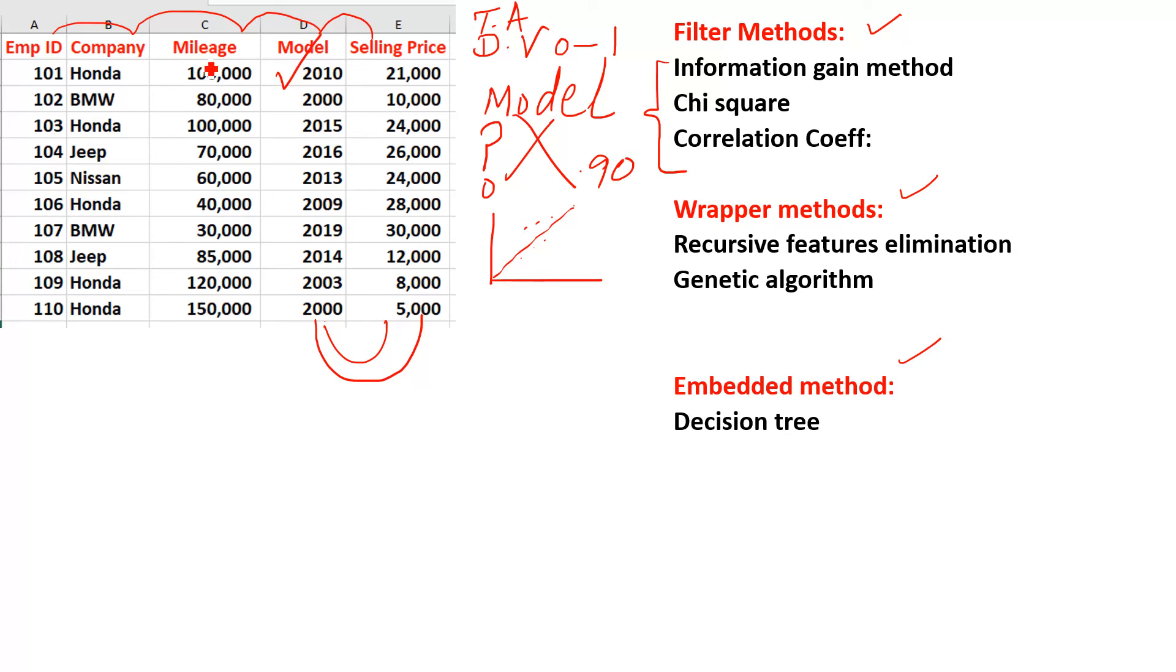Similarly, take the example of mileage. As the mileage increases, the selling price decreases. It means if we are making change in one variable, the target variable also affects.